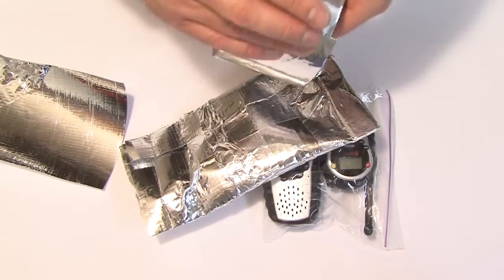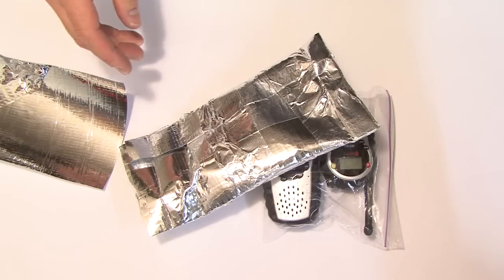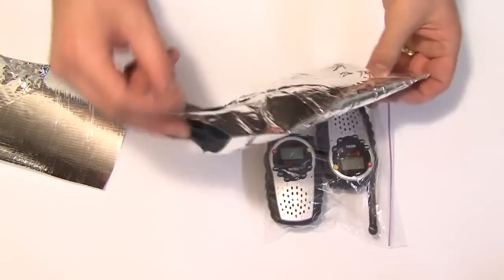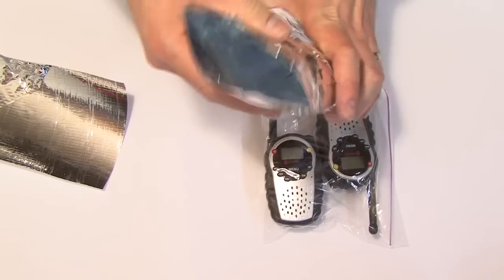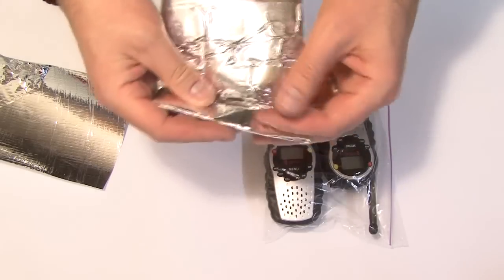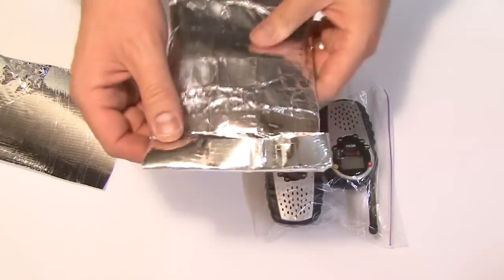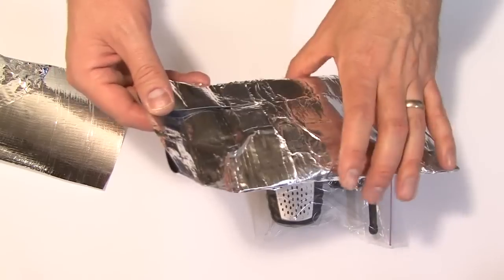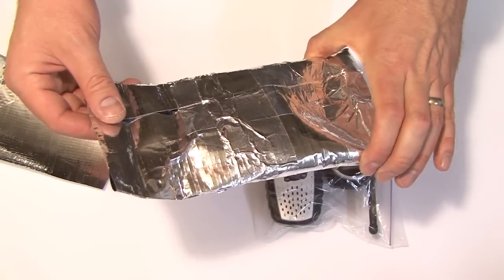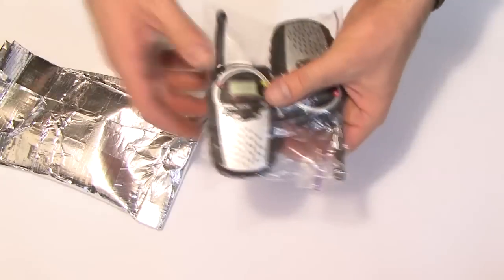A good way to test it if you get some RF shielding is make the bag, put your cell phone in it, seal it with the tape. Make sure that all the corners are sealed and then give that phone a call. If it rings, you know it's not working.